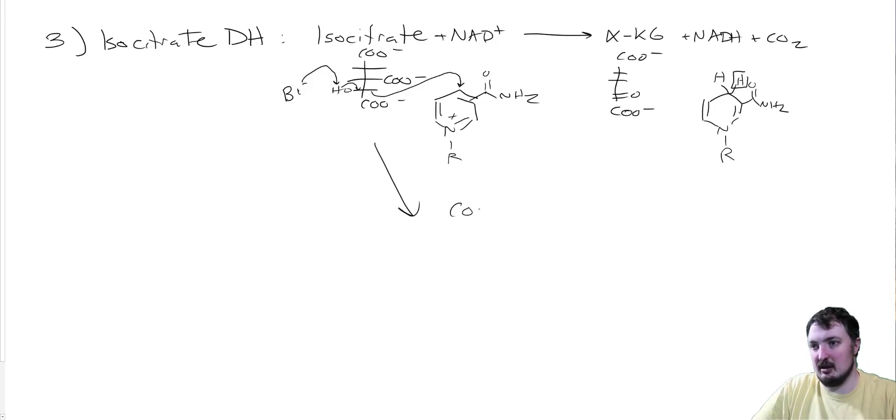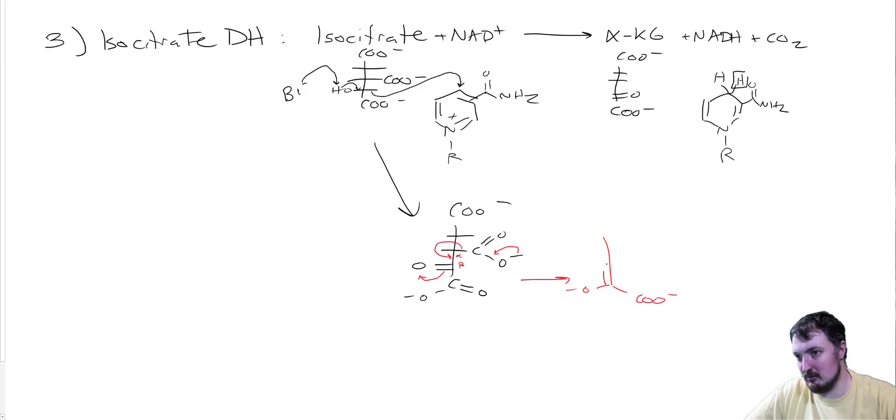I'm going to draw the intermediate here after the oxidation step. We have now made NADH, but we have not yet formed the CO2. Because we now have an alpha beta acceptor, we have a carbonyl two carbons away. We are able to do the elimination to CO2, form the enolate, and re-grab a hydrogen off of that old base. That forms us into alpha-ketoglutarate and gives us our CO2 that we needed.